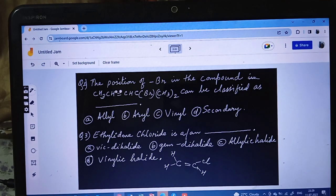Now let's see question number 2. The position of Br in the compound CH3-CH=CH-C(Br)(CH3)2 can be classified as? Options are: allyl, aryl, vinyl and secondary. Now we all know that when a doubly bonded carbon - if a carbon is directly attached to doubly bonded carbon, and that carbon contains a halogen or any other group, then we call it allylic. So your answer is 2 ka A, allylic carbon.